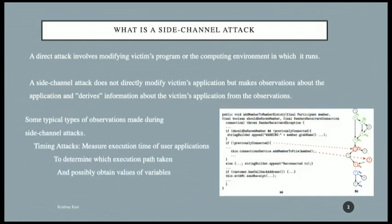Some examples of side-channel properties you can observe: one is the execution time of a program — how long did the program take to execute? Based on that, you can predict which branch was taken. You have branch paths; depending on execution times, you can find out which path was taken. And based on which path was taken, you also know the condition value at that branch — for example, whether the value was 0 or greater than 0. Those are called timing attacks.